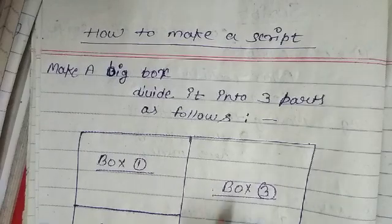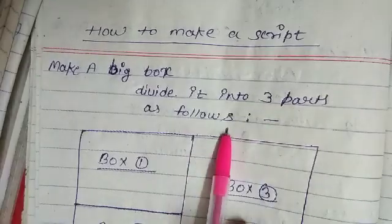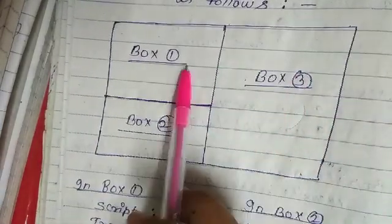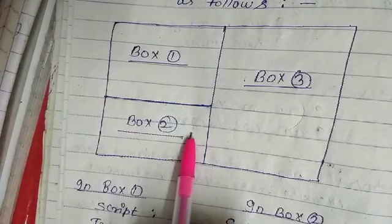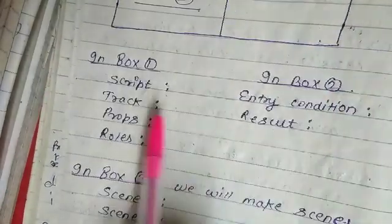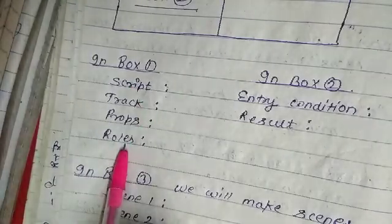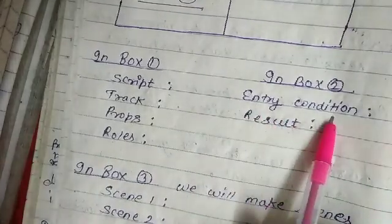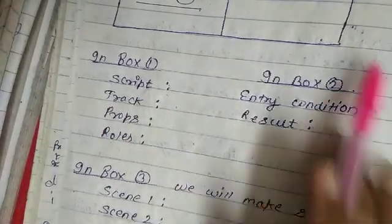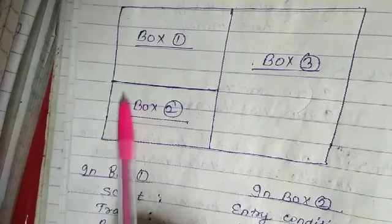Now, how to make a script. We make a big box and divide it into three parts. In box one, you include script track, roles, and props. In box two, you write entry condition and result. Box three is where you write the scenes.